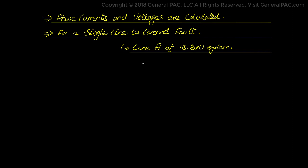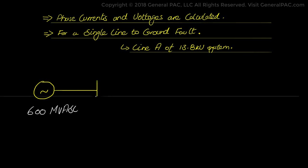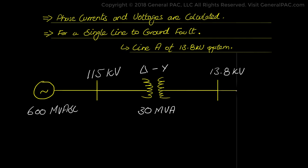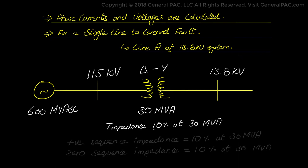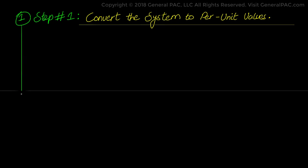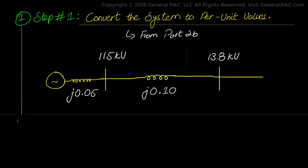Let's get started with our previous example. We have three synchronous generators having a short circuit capability of 600 MVA connected to a 115 kV bus. A delta-Y transformer rated at 30 MVA connects the 115 kV bus to the 13.8 kV bus and has an impedance of 10% at 30 MVA. Step 1 asked us to convert our system into per unit values, which we did in Part 2b. Here we draw the same network again.